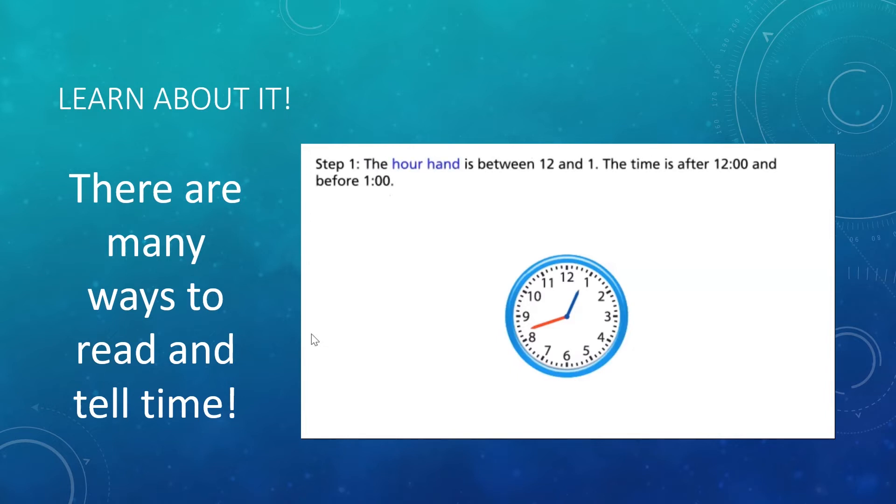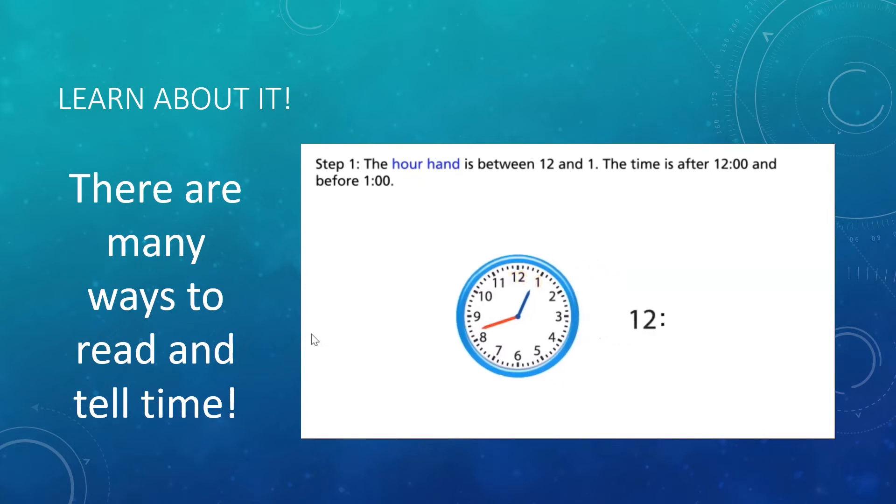Step 1. The hour hand is between 12 and 1. The time is after 12 o'clock and before 1 o'clock. Step 2. In 5 minutes, the minute hand moves from one number to the next. Count by fives from the 12 to the 8. This is 40 minutes.